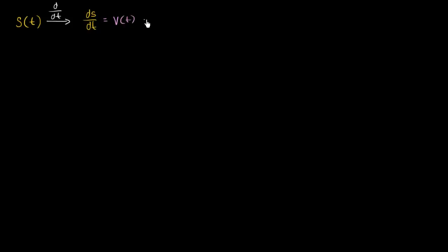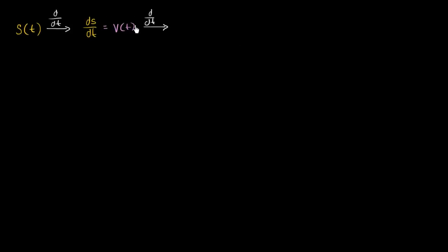Now, what if we were to take the derivative of that with respect to time? We could view this as the second derivative — we're taking the derivative not once, but twice of our position function — or you could say we're taking the derivative with respect to time of our velocity function. This is going to be dv/dt, the rate at which velocity is changing with respect to time. And what's another word for that? That's also called acceleration — our acceleration as a function of time. So you start with position, take its derivative with respect to time, you get velocity. Take that derivative again, you get acceleration.